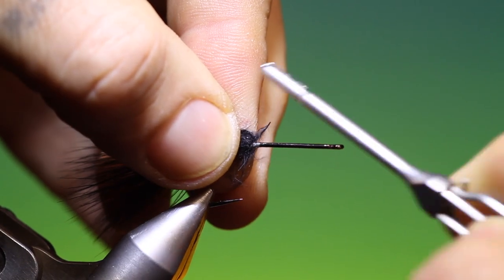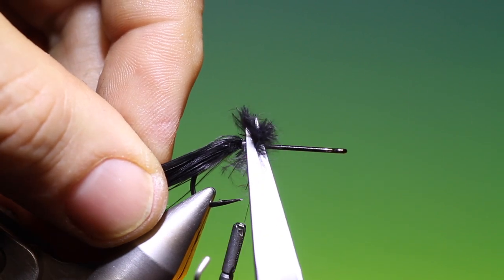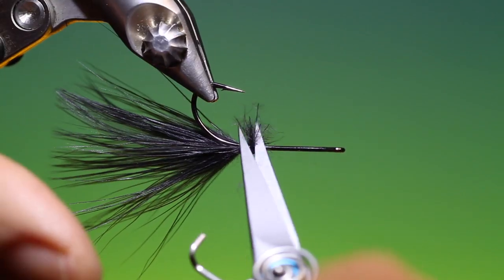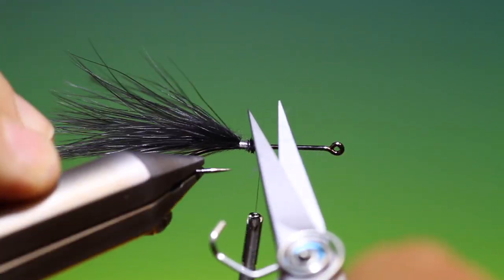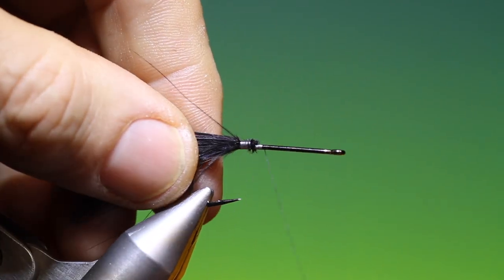We don't want that to interfere with the spinning of the deer hair. So once I've secured that and just tacked it down, I'll just go around and remove those surplus ends. There we are, that's looking good.